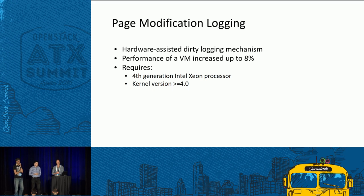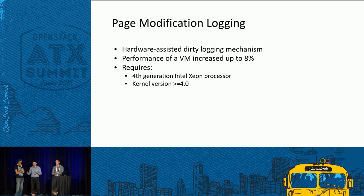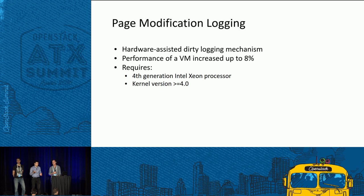There is also Page Modification Logging (PML), which is not part of OpenStack itself — it was merged into KVM during the Mitaka cycle. Normally, when a VM writes to memory during live migration, the hypervisor must pause the VM thread, log the dirty pages, then unpause it. With PML, there's no need to pause the VM — the CPU handles dirty page tracking, improving VM performance by up to 8%. It requires kernel 4.0 and fourth-generation Intel Xeon processors.